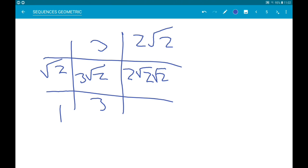3 times 1 is 3. Root 2 times 2 root 2 is 2 root 2 root 2. Now, root 2 root 2 is 2. So, we have 2 times 2, which is 4. And then we have 1 times 2 root 2, so that's 2 root 2.